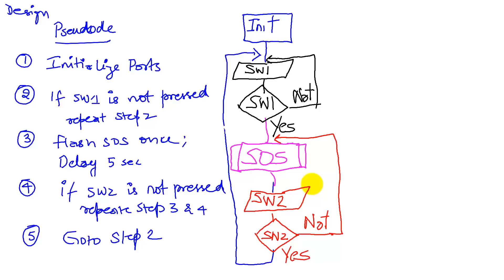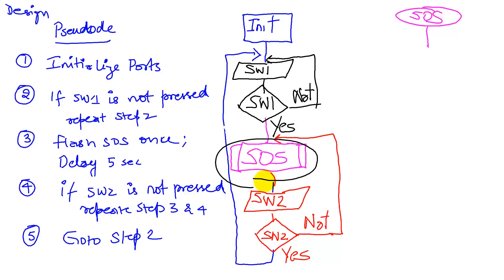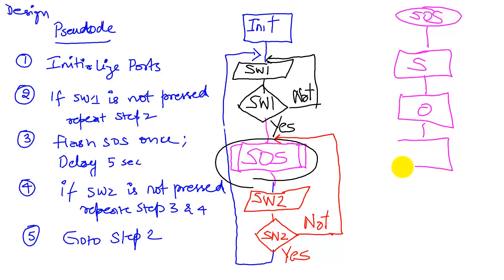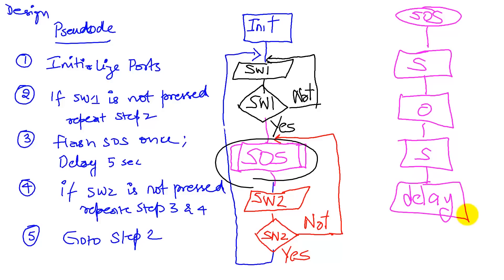We left off how to do an SOS, so we've created a function called SOS. A composite box is represented by a box with double lines on it — that's going to be a subroutine called SOS. The first thing we do is an S, then an O, then an S again. And then we delay. And then we return. So now we have a flowchart that gives us a detailed view of how we're going to design the system. Now can we build it? Let's do it.